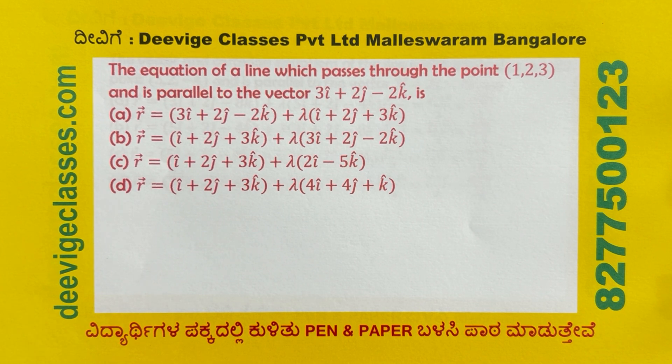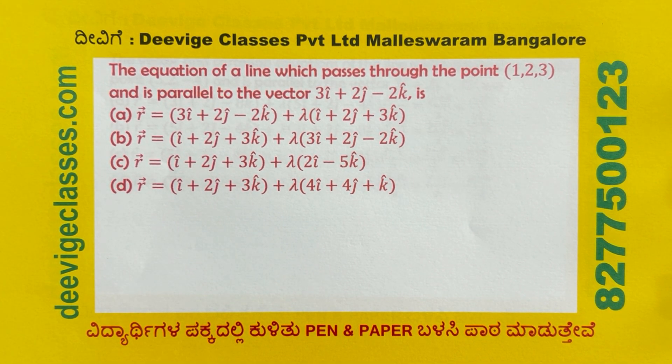The equation of a line which passes through the point (1, 2, 3) and is parallel to the vector 3i-cap plus 2j-cap minus 2k-cap.